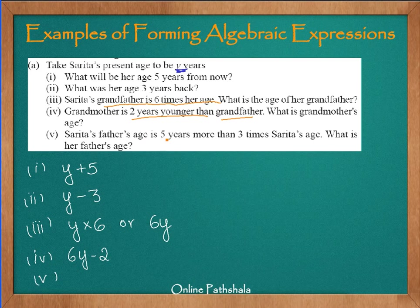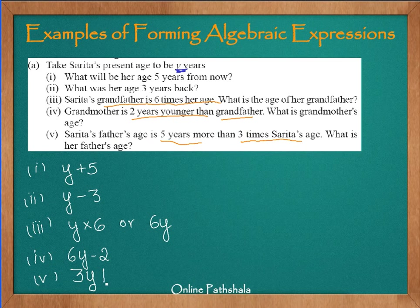The fifth question says Sarita's father's age is 5 years more than 3 times her age. It says 5 years more than 3 times Sarita's age, so first we get 3 times Sarita's age, which is 3y years, and then add 5 to it. So her father's age is 3y plus 5 years. In this example we learnt how to convert a statement into an algebraic expression.